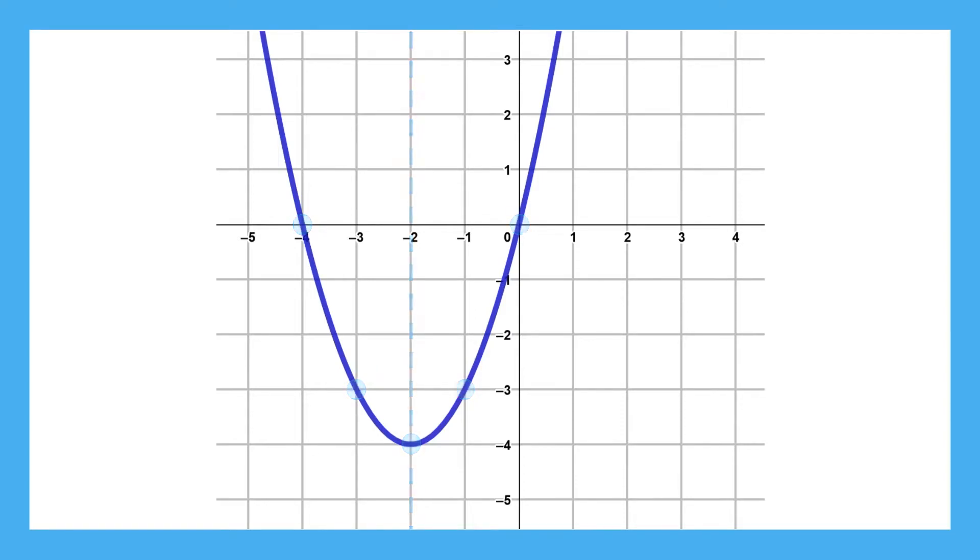The second thing to know is that because every parabola has a side going down and a side going up, there is always a maximum or minimum point. That point is called the vertex, and it also just happens to be on the line of symmetry.